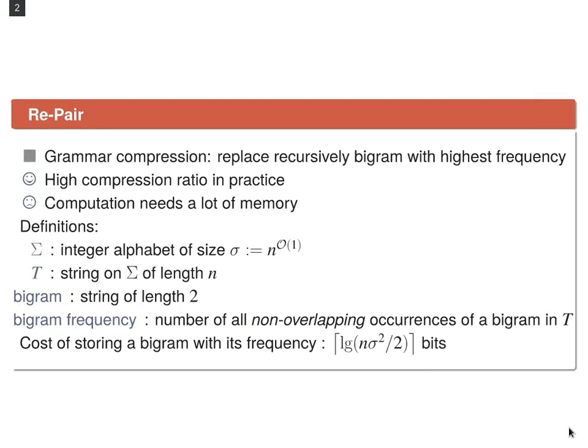REPAIR is a grammar compression where we replace the bigram with the highest frequency recursively until there is no bigram left with a frequency larger than one. A bigram is a string of length 2 and the bigram frequency is a number of all non-overlapping occurrences of a bigram in the text.